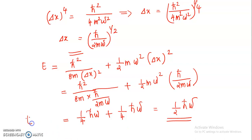So the ground state energy of the one-dimensional linear harmonic oscillator is equal to half ħω. This is a consequence of Heisenberg's uncertainty principle. Here we used the Heisenberg uncertainty relation to calculate the ground state energy of the one-dimensional linear harmonic oscillator.